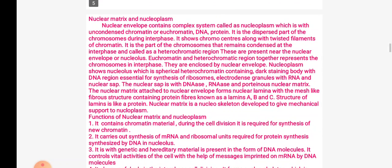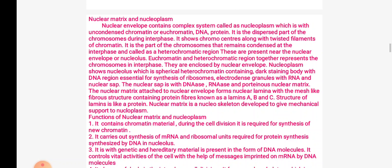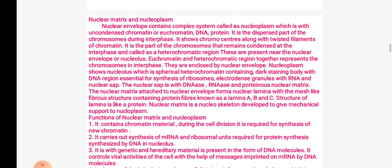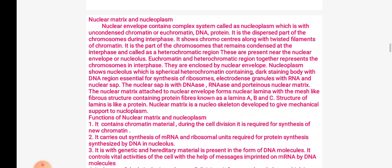Another part present in the nucleus is the nuclear matrix and nucleoplasm. The nuclear envelope contains a complex system called nucleoplasm, which is with uncondensed chromatin or euchromatin DNA and protein. It is the dispersed part of the chromosomes during interphase, showing chromocenters along with twisted filaments of chromatin. The heterochromatic region is the part of chromosomes that remains condensed at interphase. These are present near the nuclear envelope or nucleolus. Euchromatin and heterochromatic regions together represent the chromosome, enclosed by nuclear envelope.